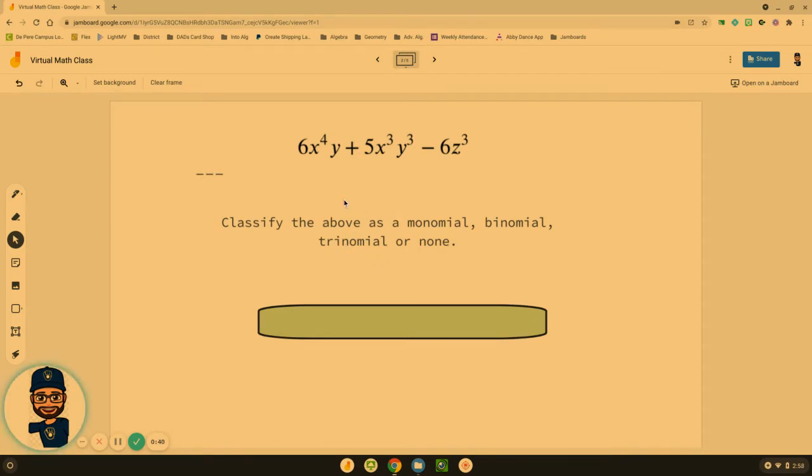Here's the first one. Take a look at this polynomial and classify it as monomial, binomial, trinomial, or none. Does it have one term, two terms, three terms? If it's got three terms, we would classify it as a trinomial.